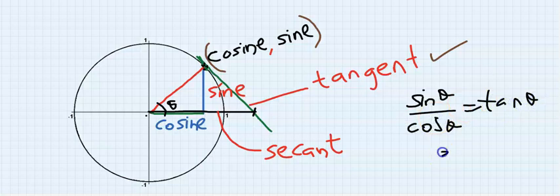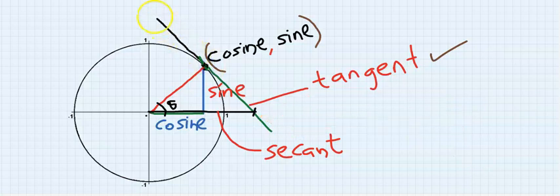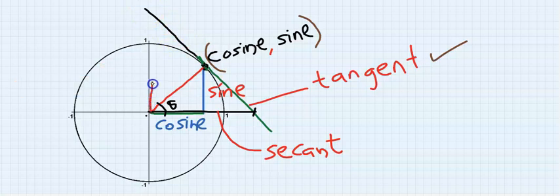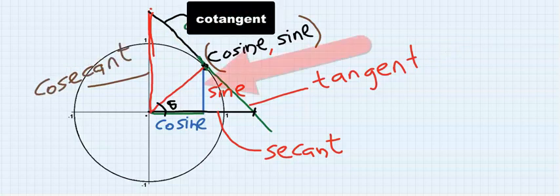Furthermore, if I extend this line to go higher and also extend the other line to increase, these two lines meet at a point. This new line here is what is called the cosecant, and this additional line is what is called the cotangent.